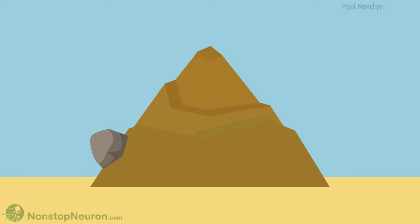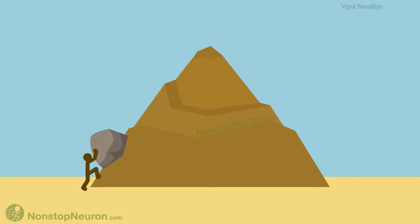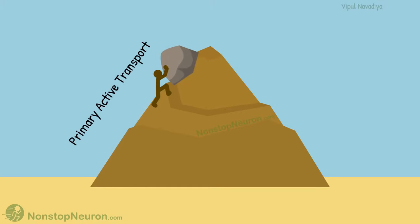Here is a hill and there is a rock at its base. We want to move the rock to the top of the hill. Obviously, we will need to put in some energy to move the rock uphill. Let's say we manually push it to the top. This movement is primary active transport — active because we are actively moving the rock, and primary because we are putting our energy directly on the rock.